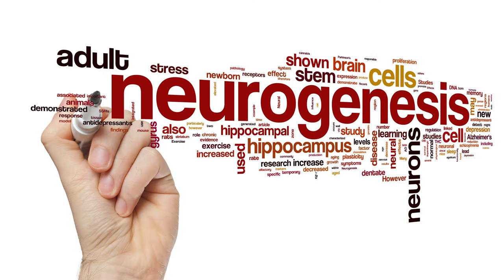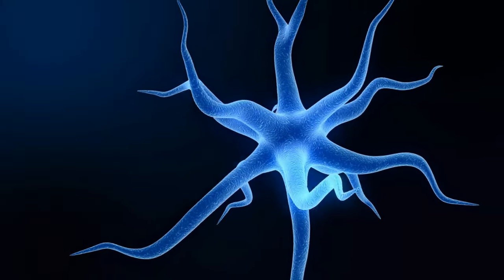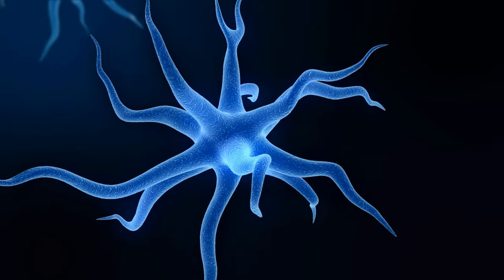This process, called neurogenesis, is most active in childhood and adolescence, but it continues into adulthood.